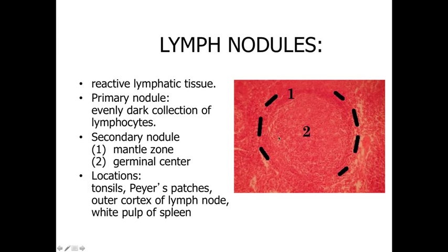Lymph nodules are going to be more organized structures, but still found in a variety of locations in the body. What you're looking at is an example of reactive tissue — a circular aggregation of lymphocytes, primarily B lymphocytes, the lymphocytes capable of producing antibodies. In this case, we've got a secondary lymph nodule. A primary lymph nodule is going to be a circular aggregate, all those small lymphocytes, evenly dark — kind of like what we see in the mantle zone around the outside of the circular aggregate.